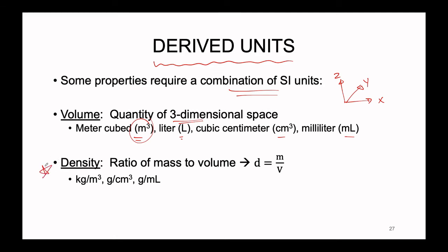Another example of a derived unit is density — the ratio of mass to volume. The equation is density equals mass divided by volume. Even without the equation, you could look at the units: if you have mass in grams and volume in milliliters, dividing one by the other gives density in grams per milliliter. The units tell you exactly what equation you need, and the equation tells you how to represent your units once the calculation is finished.